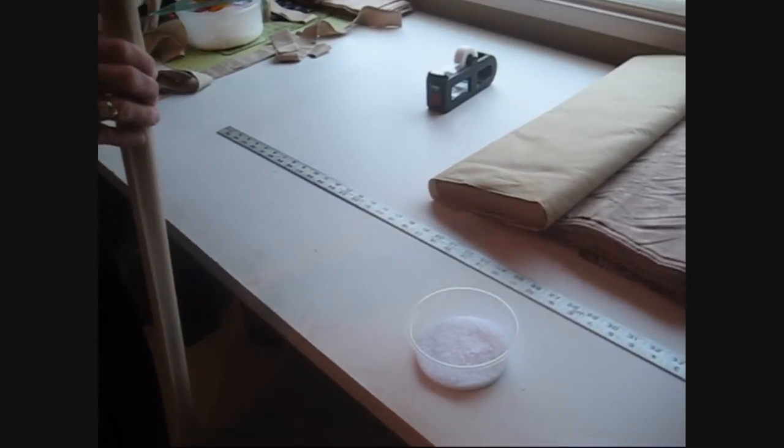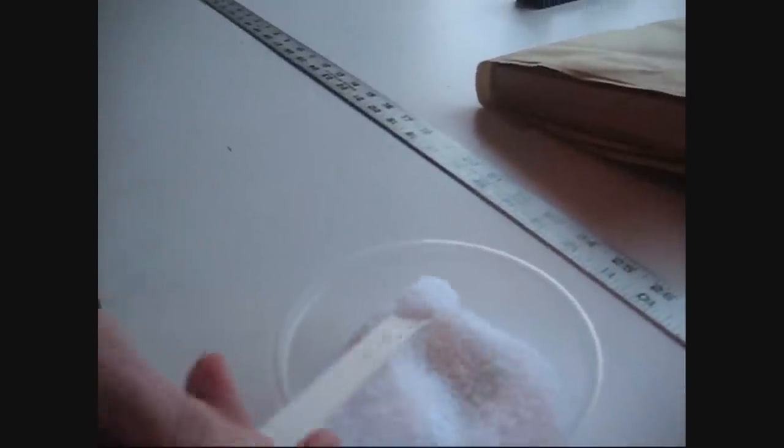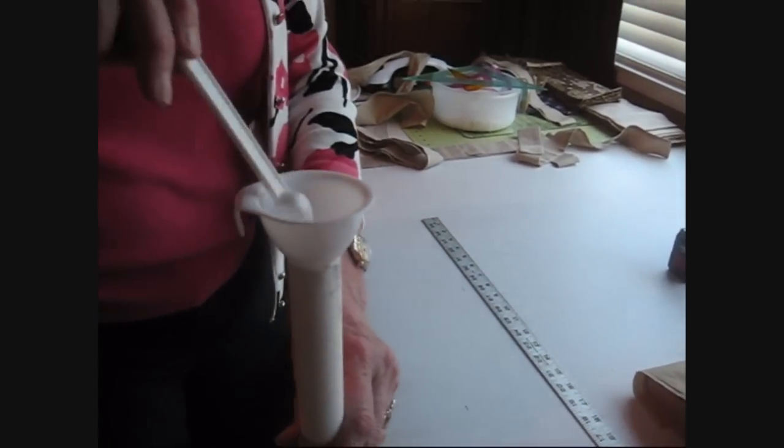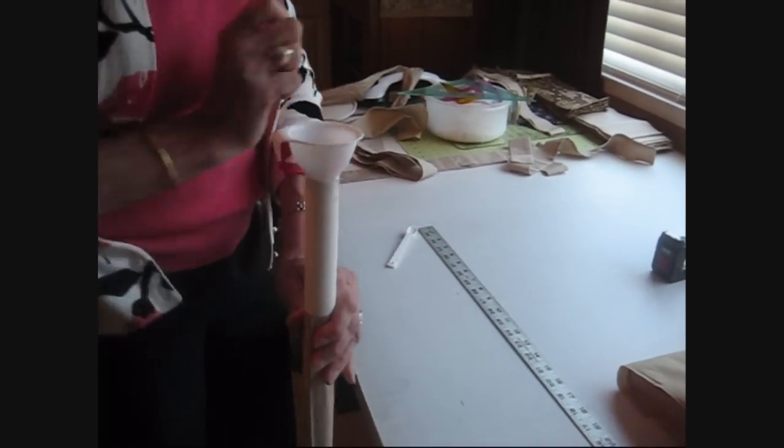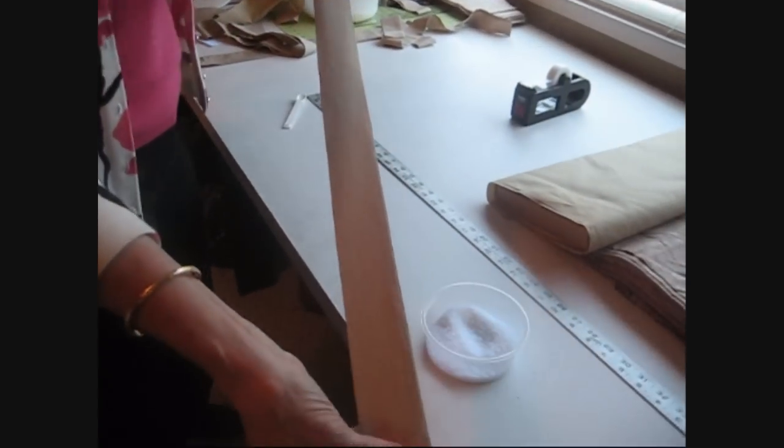You have your Waterzorb crystals, and each pocket contains only 1¼ teaspoon. Just 1¼ teaspoon, not heaped, into the tube, and there you go. The crystals are down there.